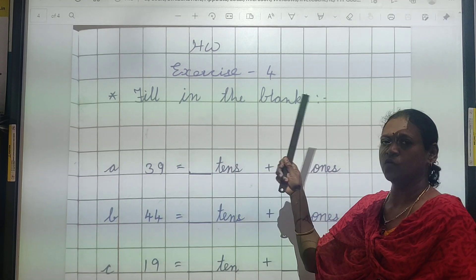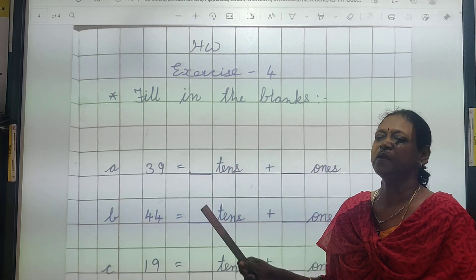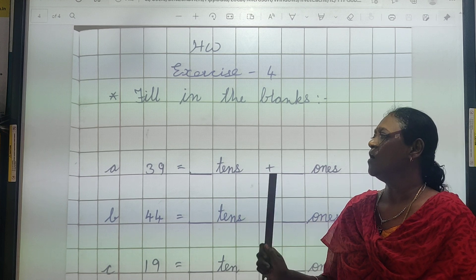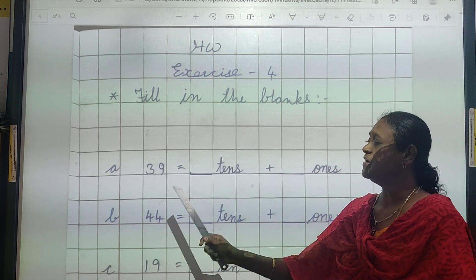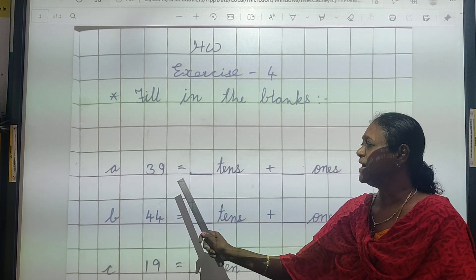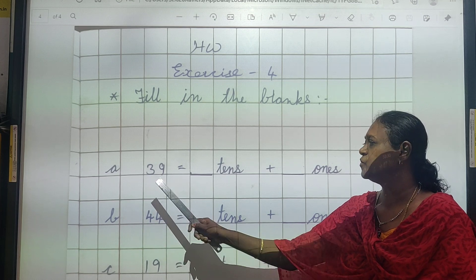This is exercise 4, fill in the blanks. This may be tens or ones we can get. And always remember, left side 9, tens here, right side ones. Copy karke. So 39, 39, here tens are here 3, 9 is ones.